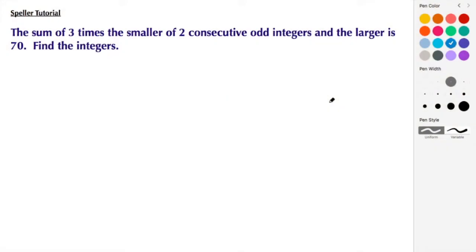Welcome back to STS. In today's tutorial, we're going to solve a word problem. The sum of three times the smaller of two consecutive odd integers and the larger is 70. First, we need to